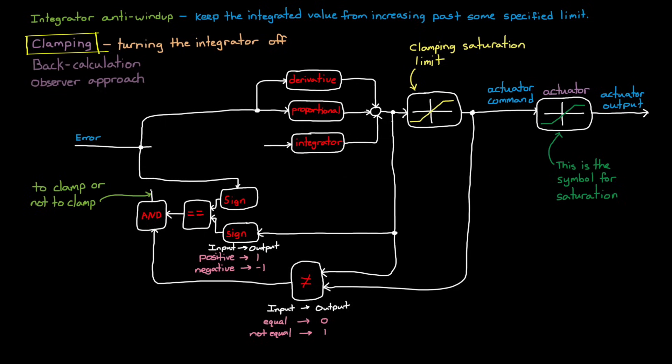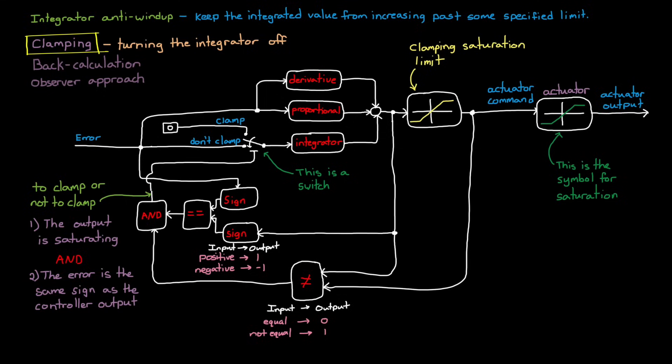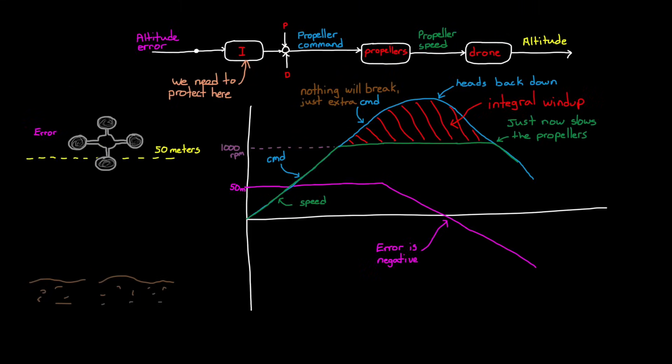If the decision is to clamp, that is the output of the AND gate is a 1, then a switch is triggered and the error term in just the integral path is set to 0, effectively shutting down integration. And once the error changes sign or the controller is no longer in saturation, the input into the integral is restored and the value immediately begins to decrease. This is also referred to as conditional integration because our controller will shut down the integrator if it meets certain conditions. One, the output is saturating, and two, the error is the same sign as the controller output. If we had an anti-windup method on the drone that we were holding in saturation, then as soon as the drone got to the commanded altitude, the error would switch signs and the integral path would immediately start to decrease the propeller speed, limiting the overshoot. And that's pretty awesome.